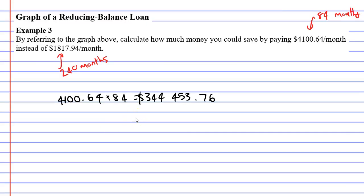Okay. So let's look at the next one, which was $1,817.94 per month. And this one we had to repay over a period of 240 months. So we had to repay it 240 times.